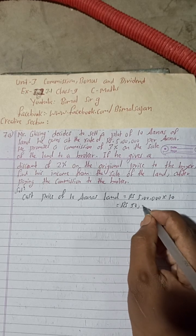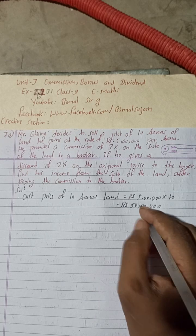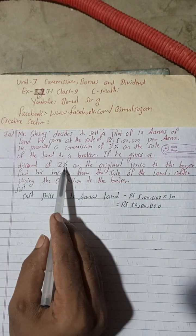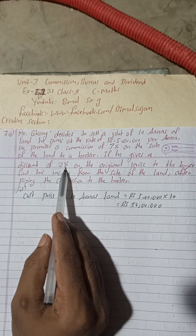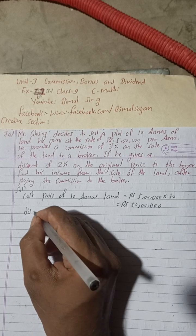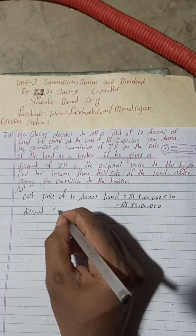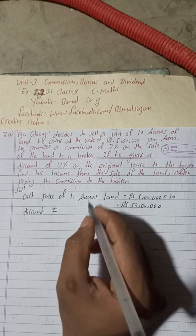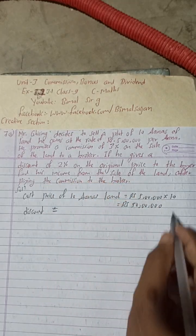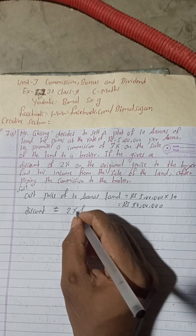So this will be Rs 50 lakhs. This will be 50 lakh. Now the question tells that if he gives a discount of 2%, okay, so discount of 2% means we have to find the discount amount. So discount is equal to, here discount is equal to what, 2% of on the original price. So original price, this is original price. Now 2% of 50 lakh.